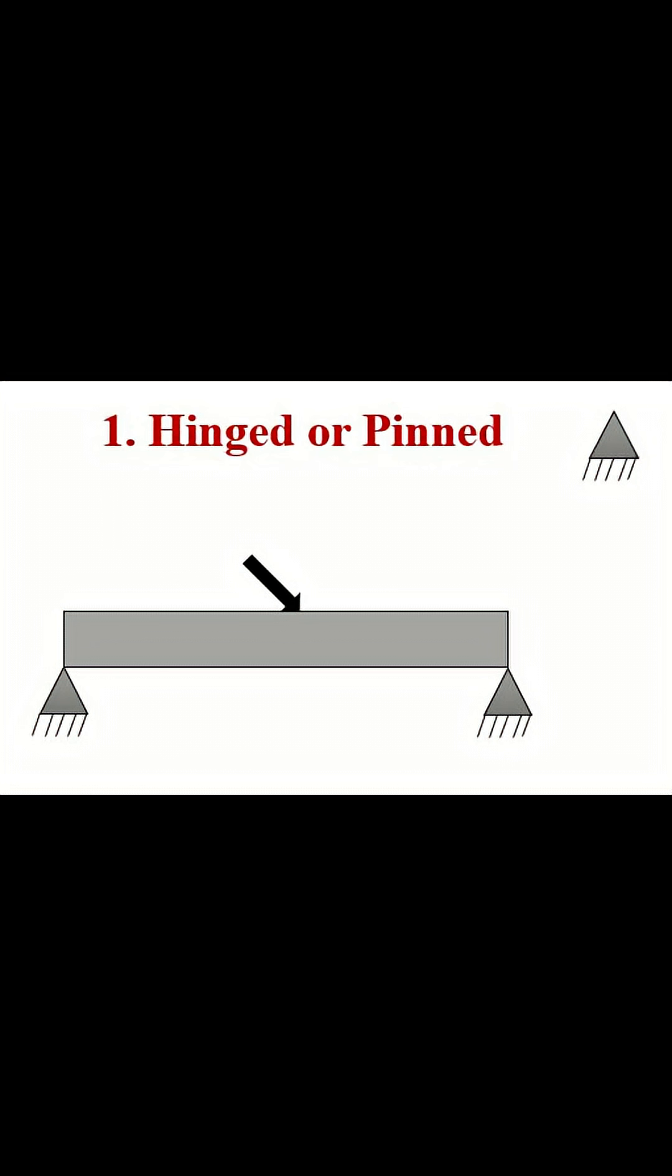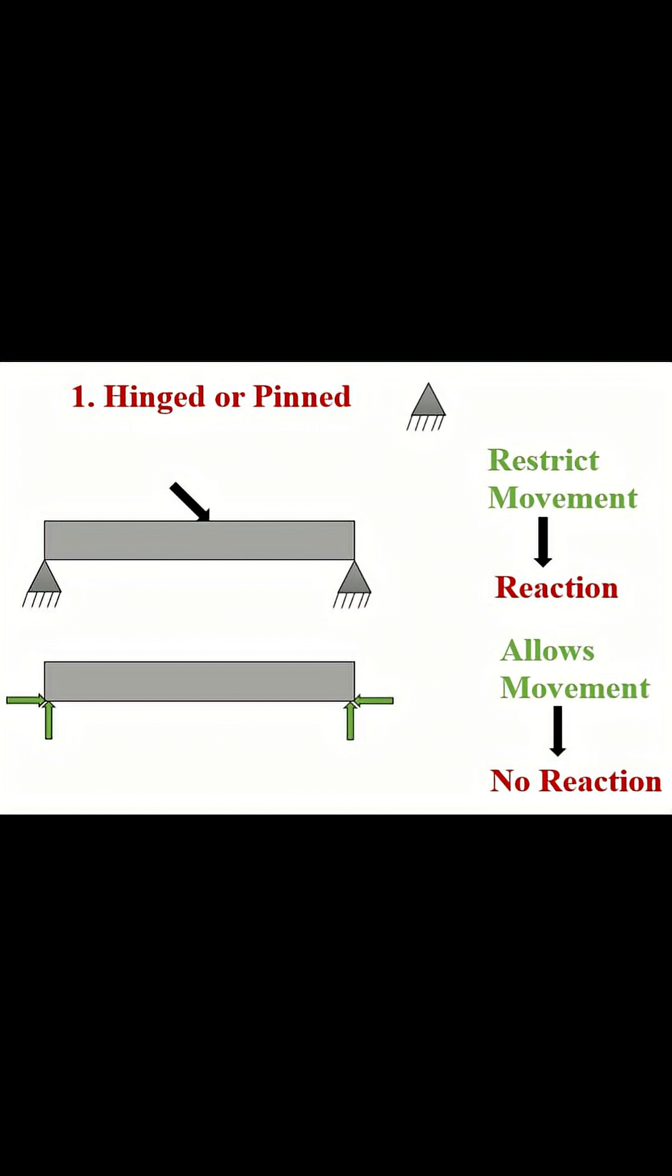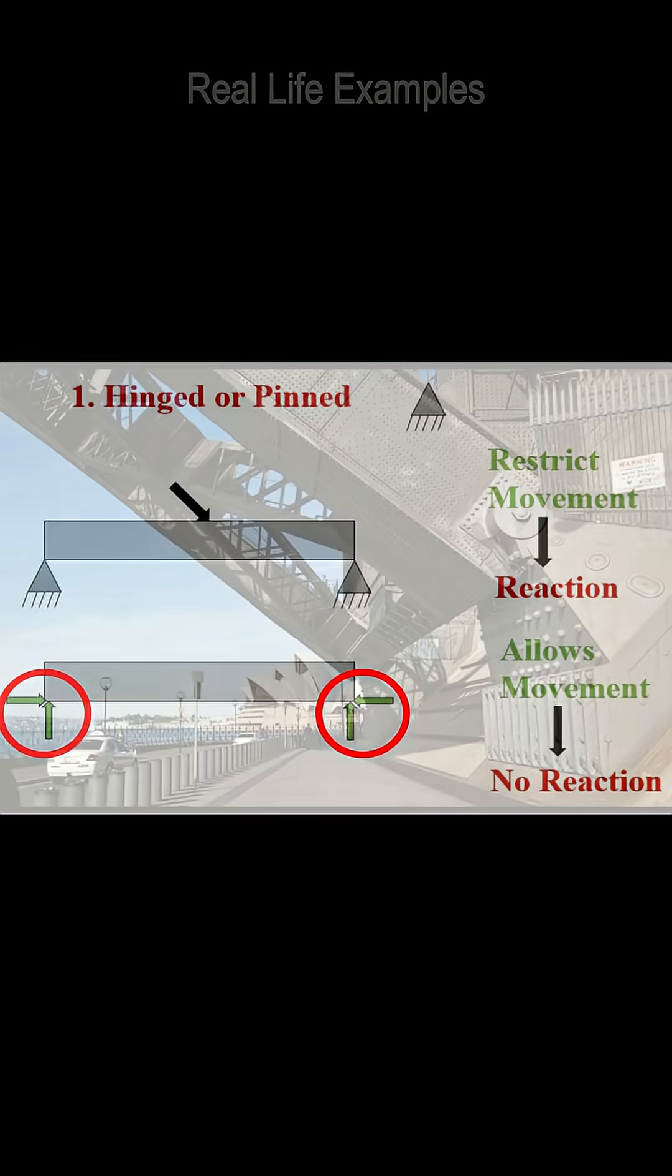A beam resting on a hinged support. Hinged support allows rotation but prevents movement in both horizontal and vertical directions. If the support allows movement, there will not be a reaction. If it restricts movement, there will be a reaction. Hence we have two reactions in hinged support: vertical and horizontal reaction.